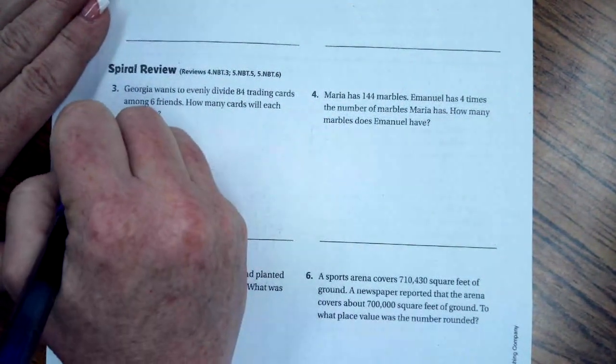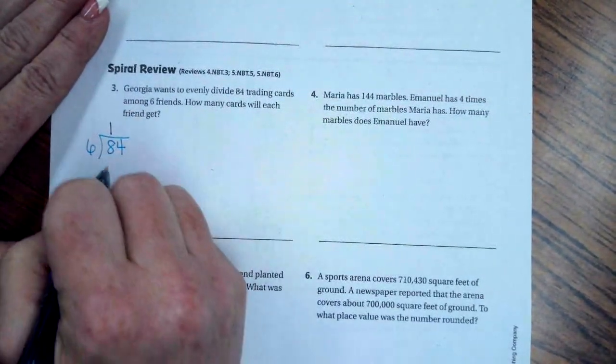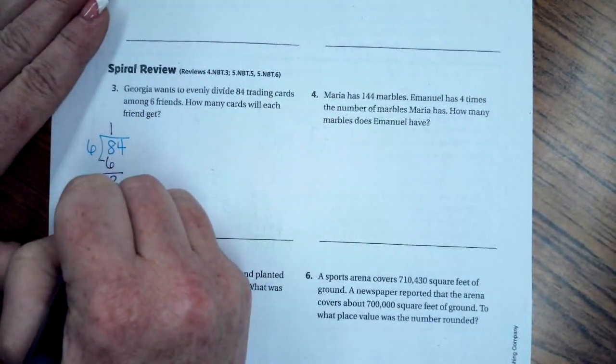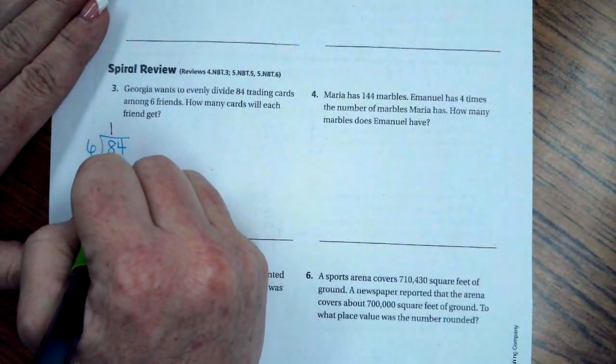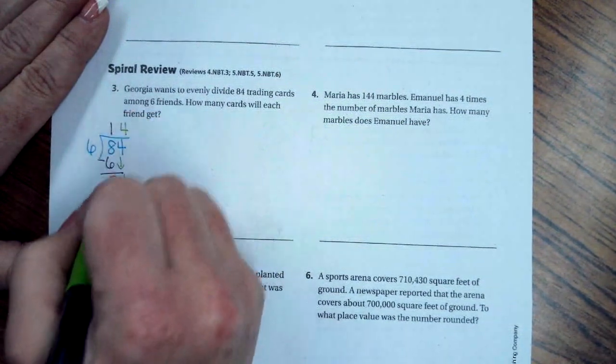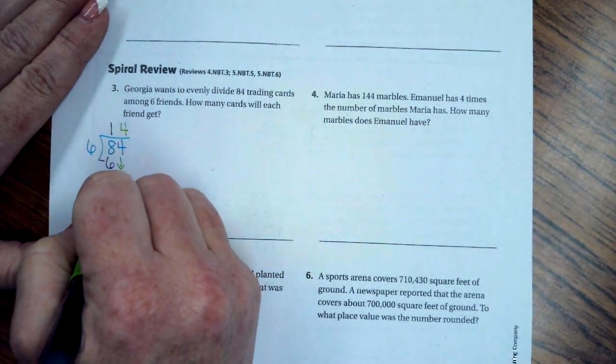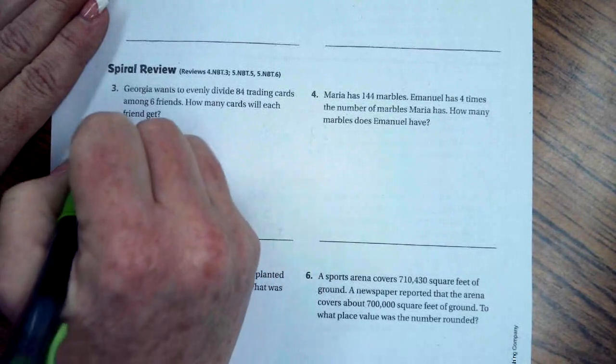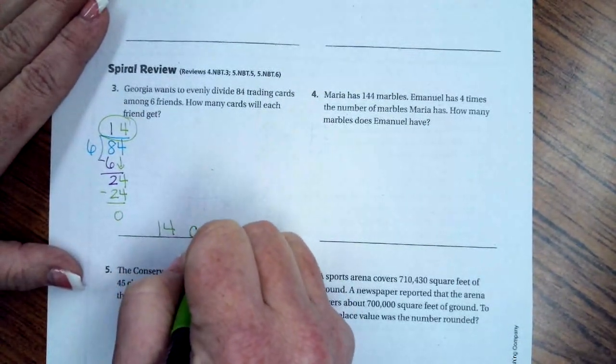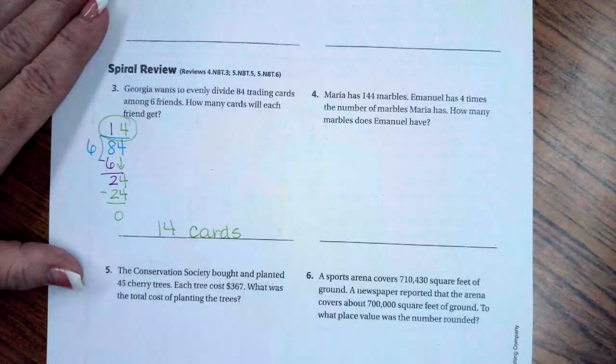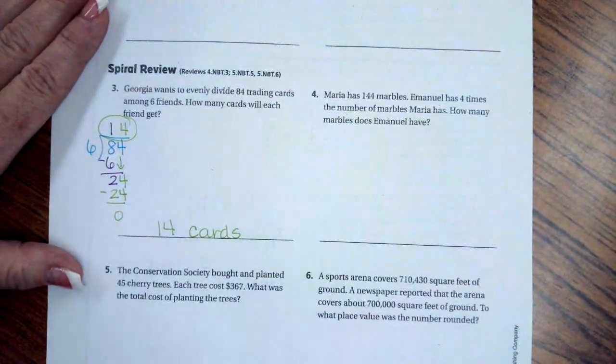That's 84 divided by six. Six goes into eight one time. One time six is six. Subtract, I get two. I'm going to bring down my four. Six goes into 24 four times. Four times six is 24. Subtract, I get nothing. So 14 cards is our answer.